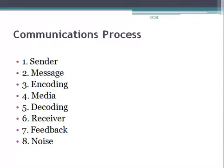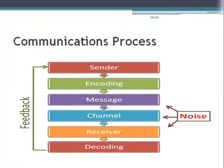The first element is Sender. The sender or communicator generates the message and conveys it to the receiver. He is the source and the one who starts the communication. Second is Messages — the idea, information, view, feeling, etc., that is generated by the sender and is then intended to be communicated further. Third is Encoding — the message generated by the sender is encoded symbolically, such as in the form of words, pictures, gestures, etc., before it is conveyed.